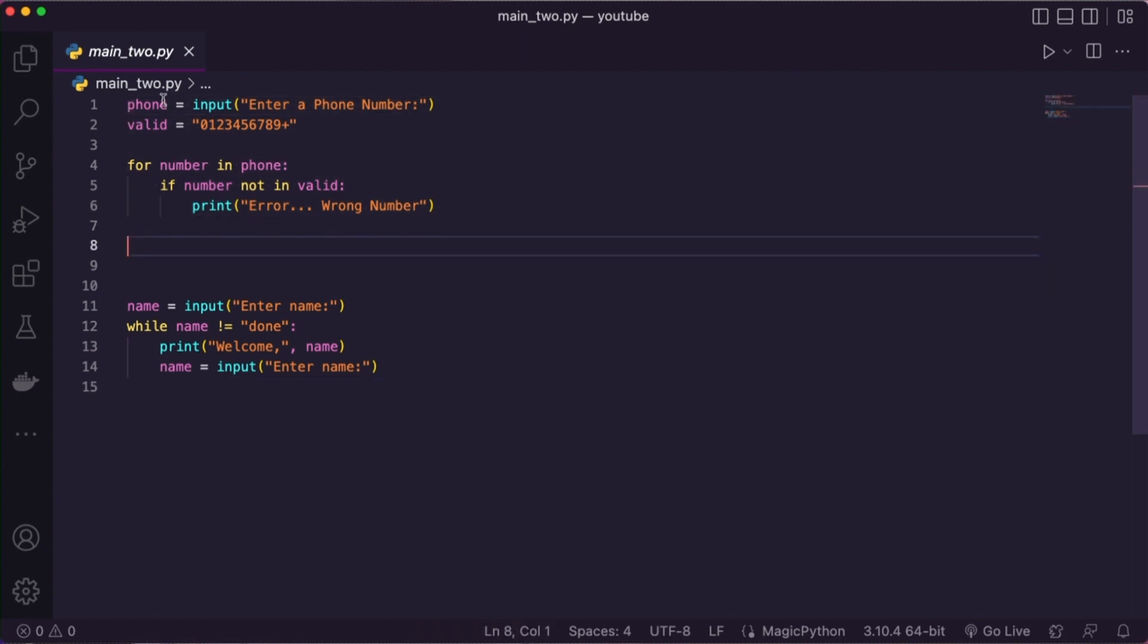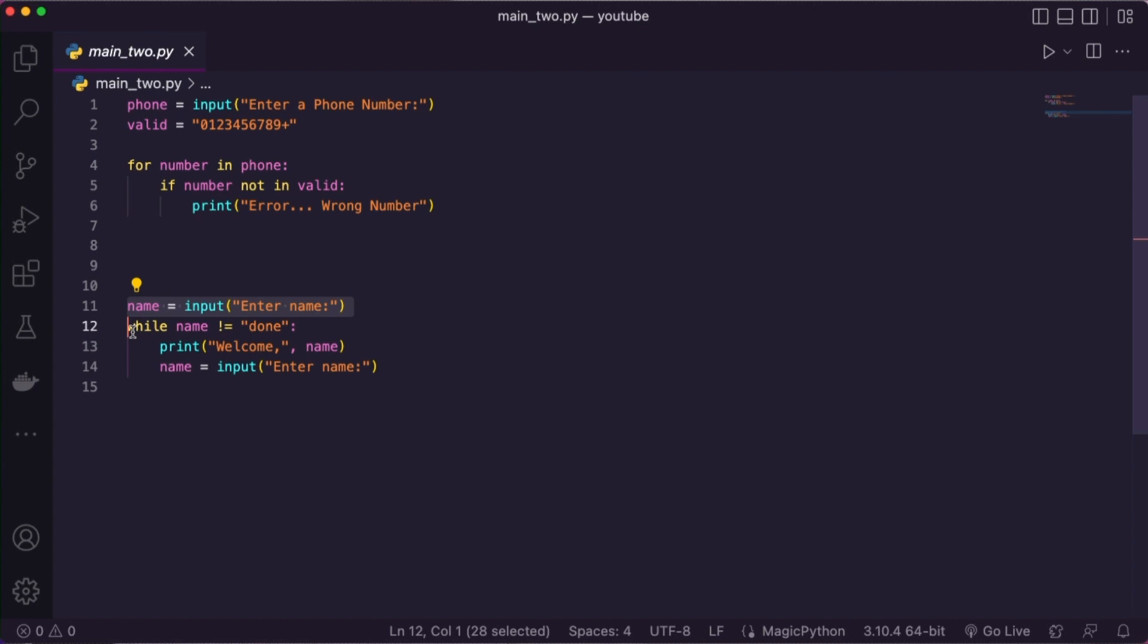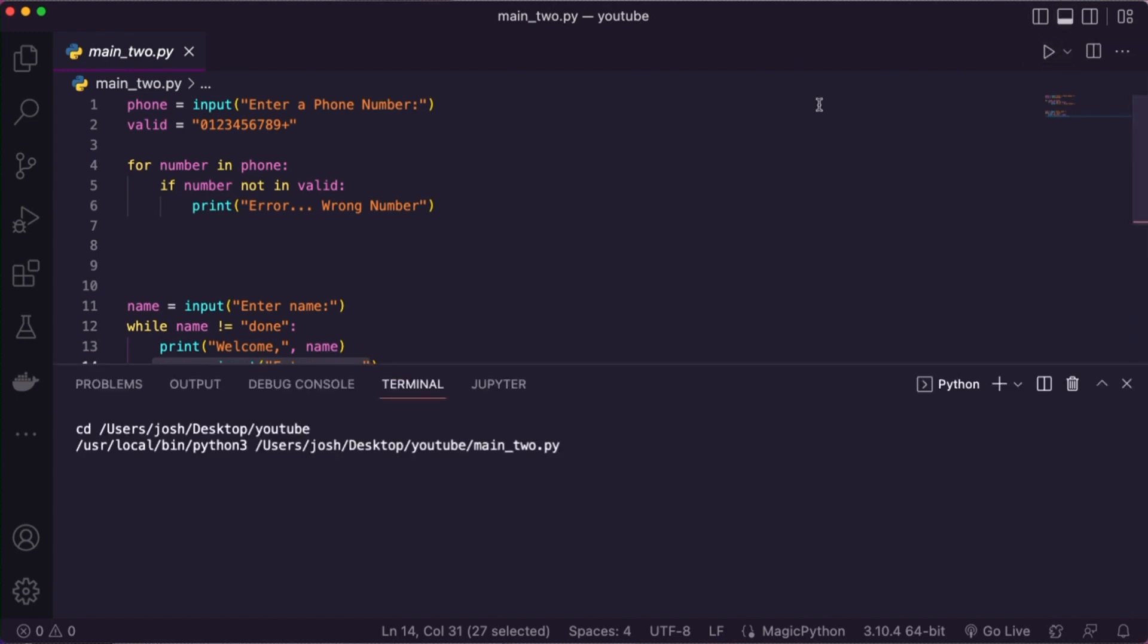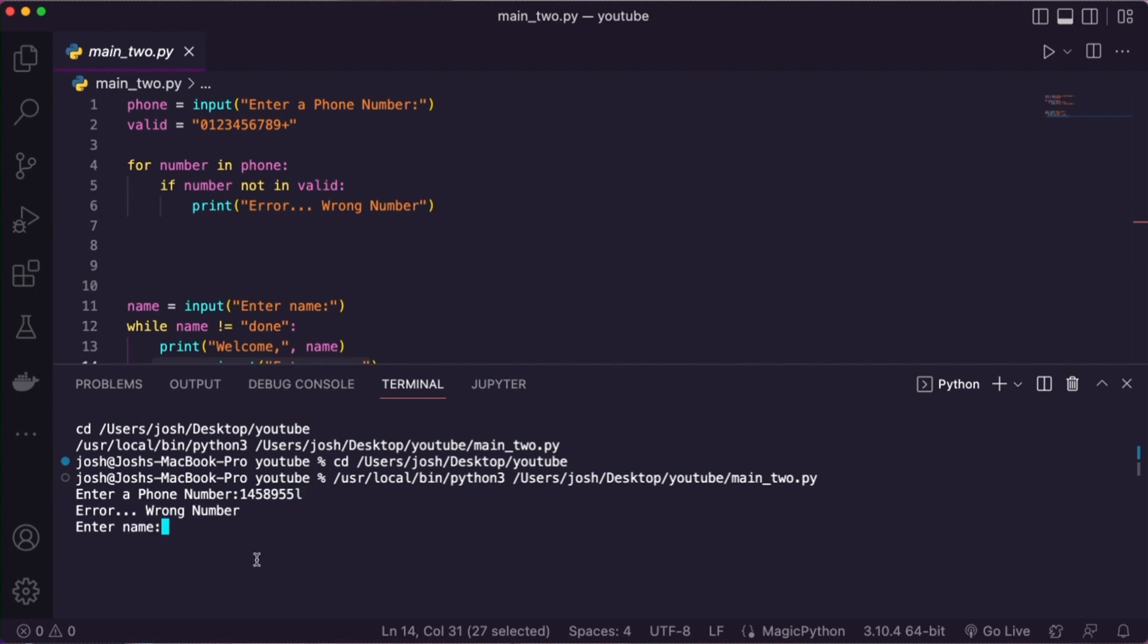Now, I spoke about the two types of loops. Here up top, I have a for loop. So, I'm going through for every number in my variable phone. If the current number is not in my variable valid, print wrong. Right? It's not a phone number if it's not in that variable. My other one, I'm asking for a name. And while my input name is not done, I'm going to print welcome that person's name. Then asking for the other name. Let's run it. Let's start off with our phone number. Let's say 1458922 L. Enter. Ooh. Error. Wrong number. That's because I said L. L is not a number.